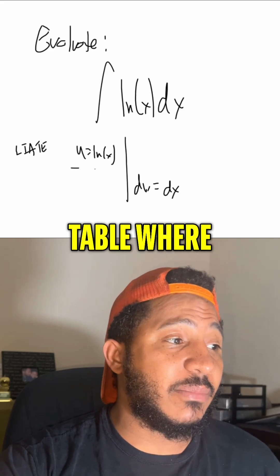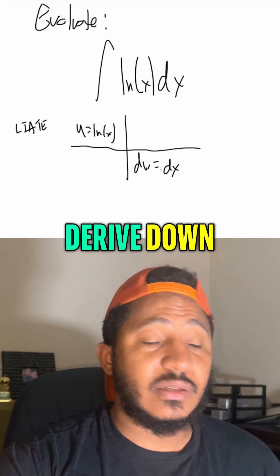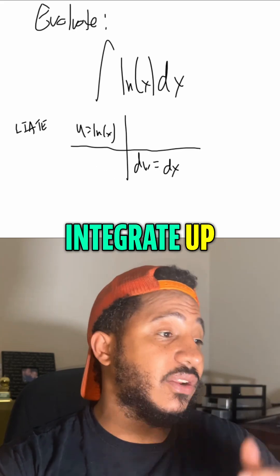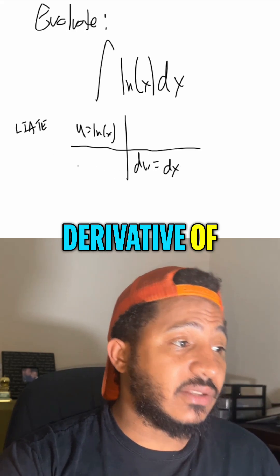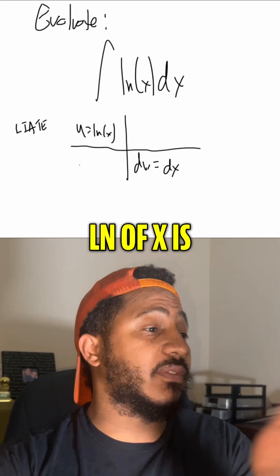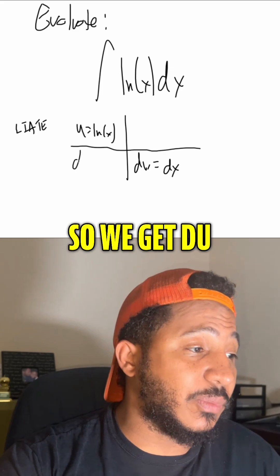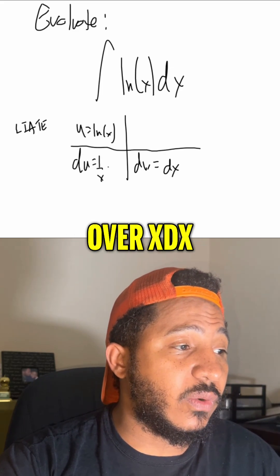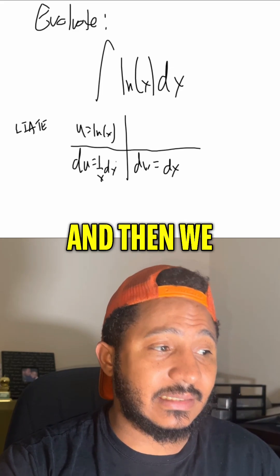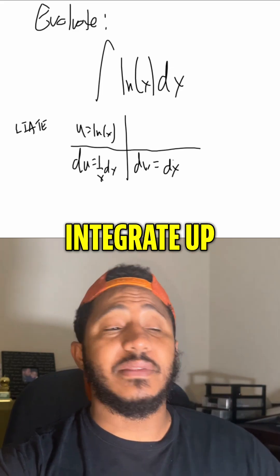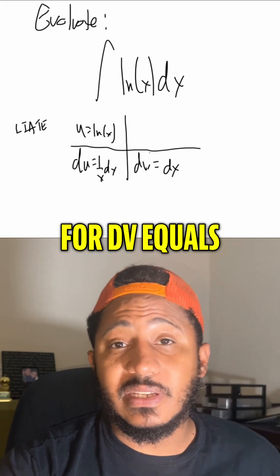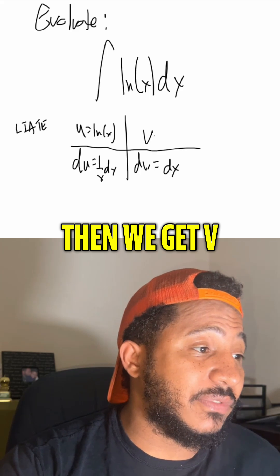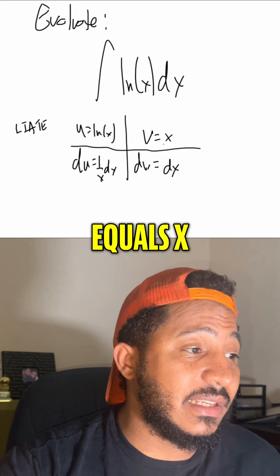Now we fill out this table where we derive down and integrate up. The derivative of ln of x gives us du equals 1 over x dx. Then we integrate up: dv equals dx, and we get v equals x.